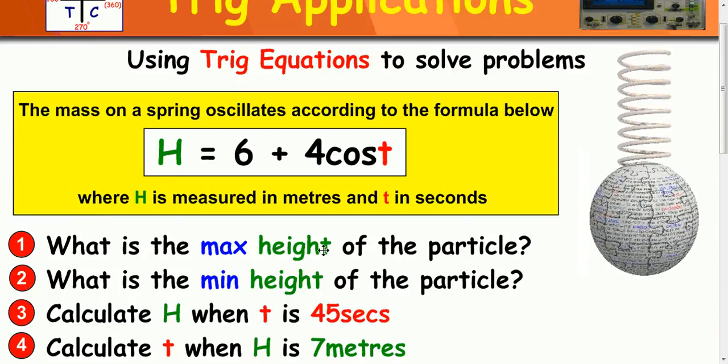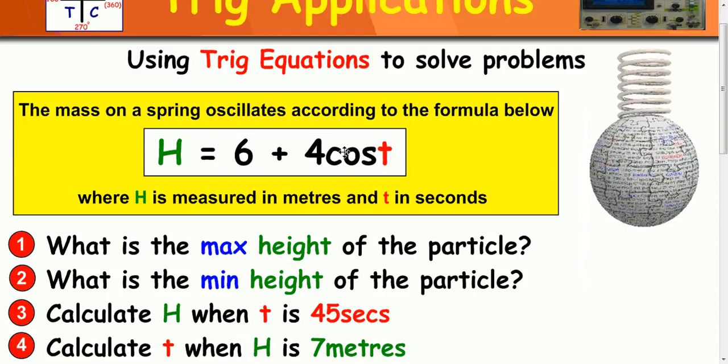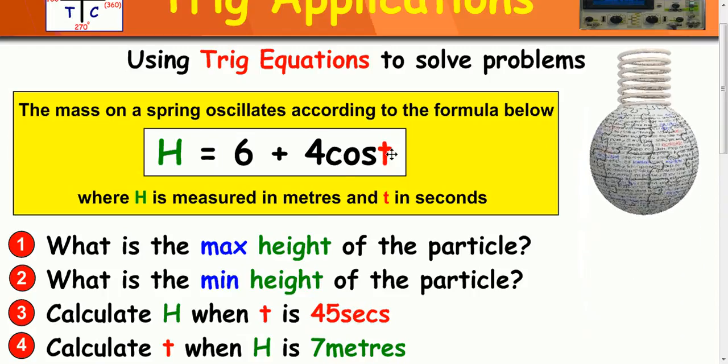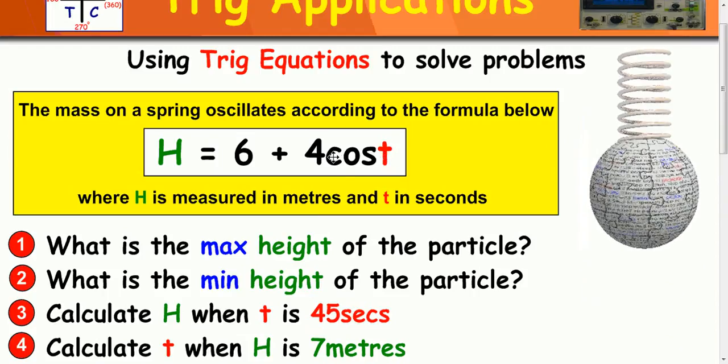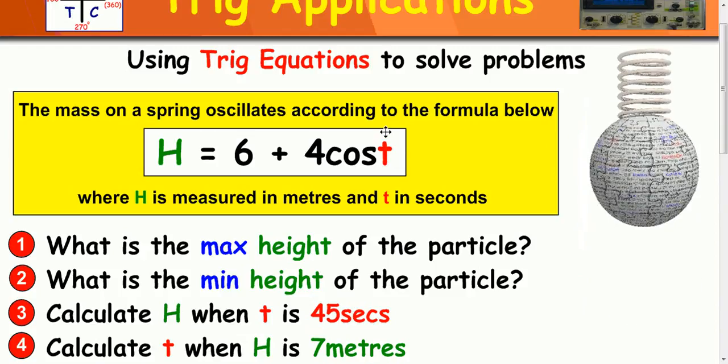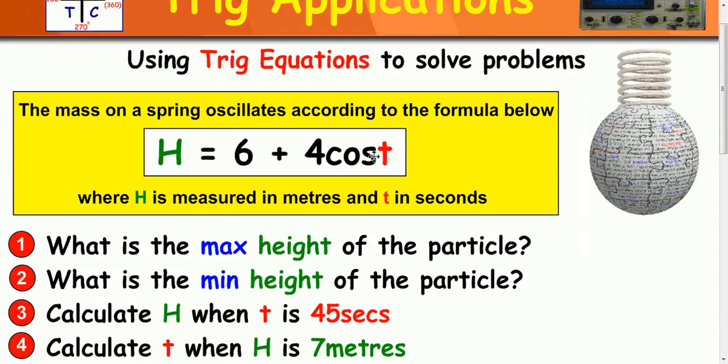Now to calculate the maximum and minimum heights, what we have to think of is how cos t changes over time. And if you think of the cosine wave, the maximum value it hits is 1 and the minimum value is negative 1.